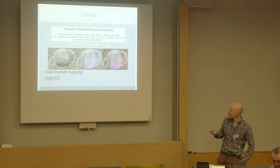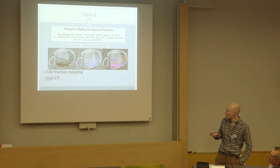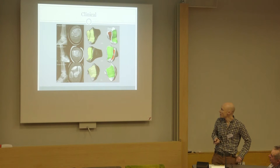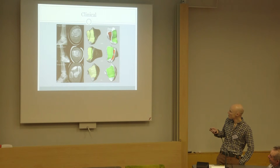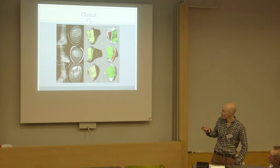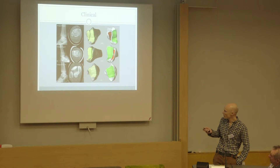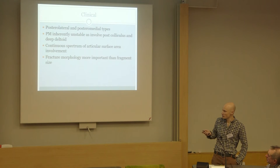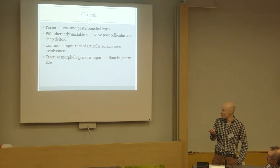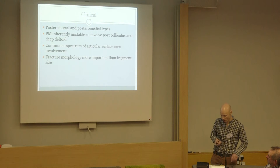We're familiar with Haraguchi's classification, which describes three groups of fractures. A group from the Netherlands further delineated fracture patterns using fracture mapping and quantitative 3D CT. The Haraguchi type 1 — the large posterolateral fragment — involves on average a quarter of the joint surface. Type 2 has a posteromedial extension involving less articular surface, but crucially extends to the medial malleolus and generally has two separate fragments. Type 3 is a lip fracture with minimal, if any, joint surface involvement. They considered the posterolateral and posteromedial fragments as distinct types. The posteromedial fragment is inherently unstable — it goes into the posterior colliculus and destabilizes the deltoid. The posterolateral fragments have a spectrum of articular surface involvement. Their conclusion: morphology is more important than size.